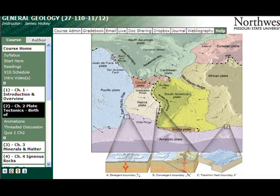Even though plate tectonics all kind of hit the street in the late 60s and early 70s — that would be 1960s and 1970s — that wasn't the first time it was introduced. If you go back to the early 20th century, where this chapter actually opens up, a gentleman by the name of Alfred Wegener and his colleagues had proposed something called the hypothesis of continental drift. The problem they ran into was that any time you introduce something totally new into the scientific community, it's often met with a lot of skepticism.